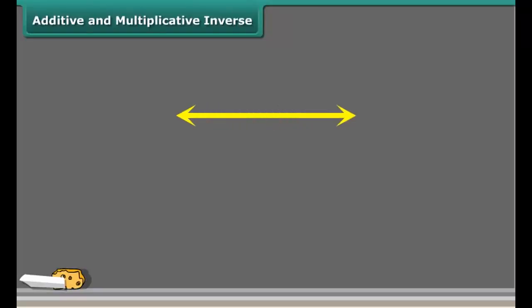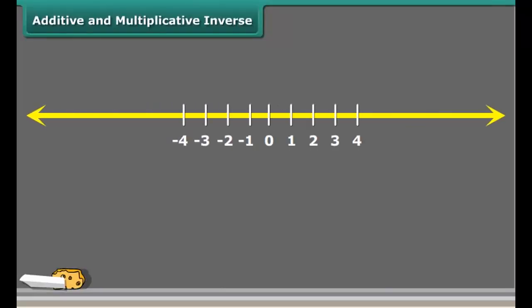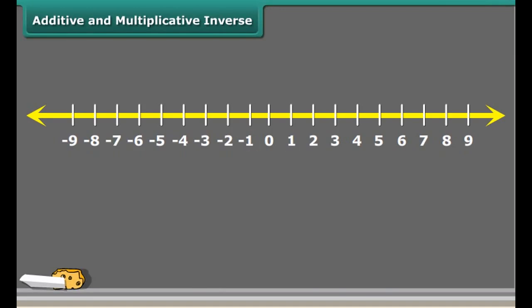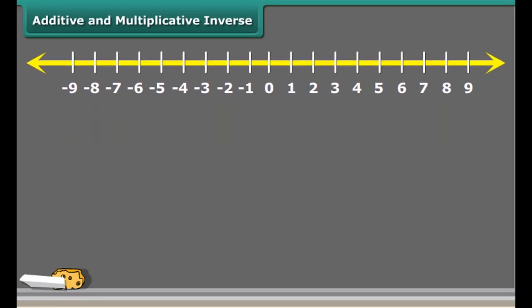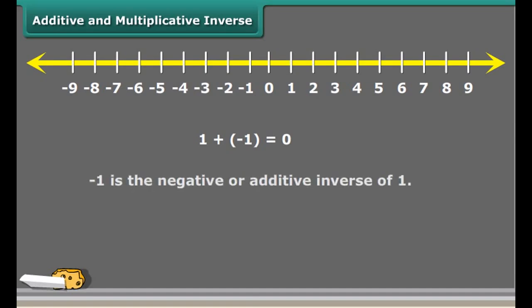Now check out the multiplication of a rational number with one. What did you observe? When we multiply a rational number with one, the product is always again that rational number. For this reason, one is called the multiplicative identity of rational numbers.